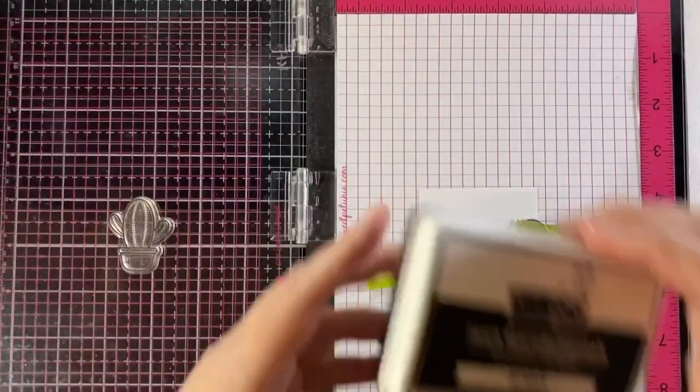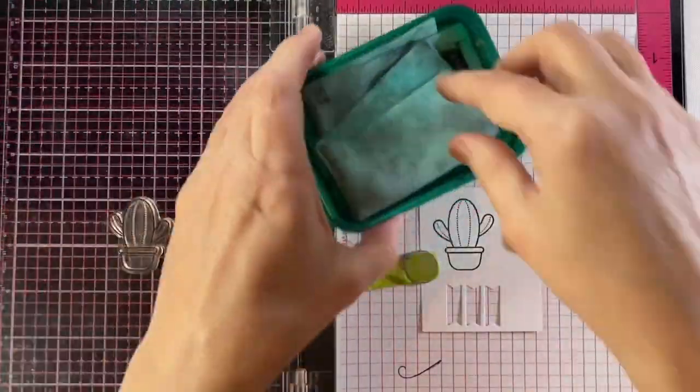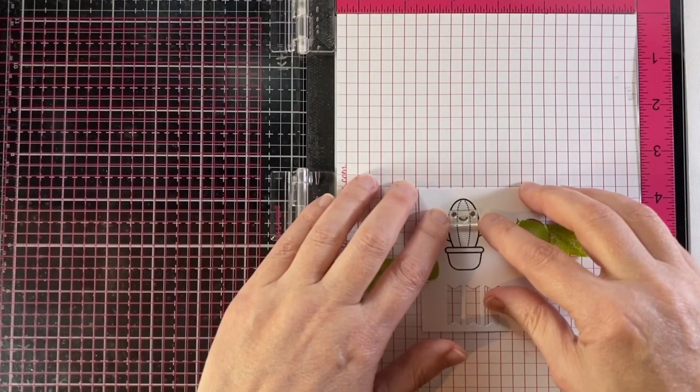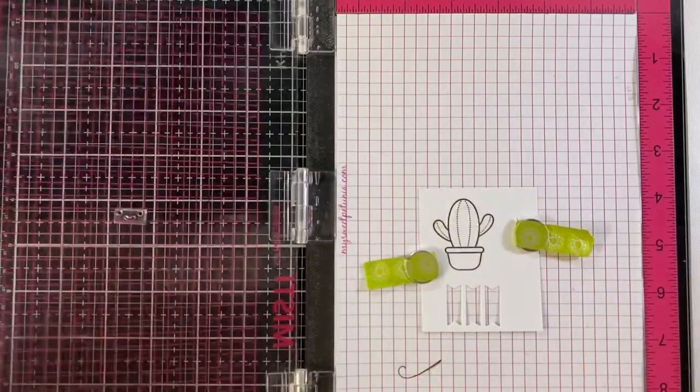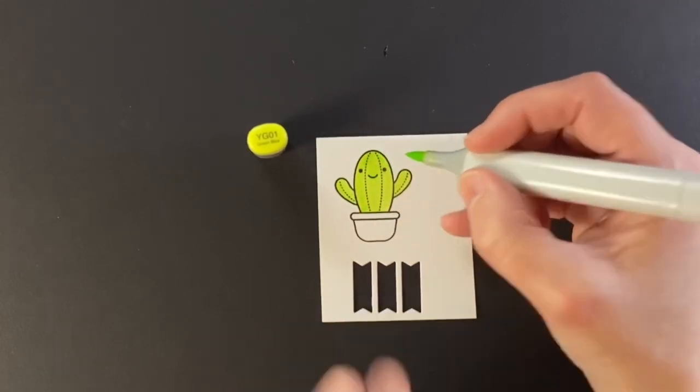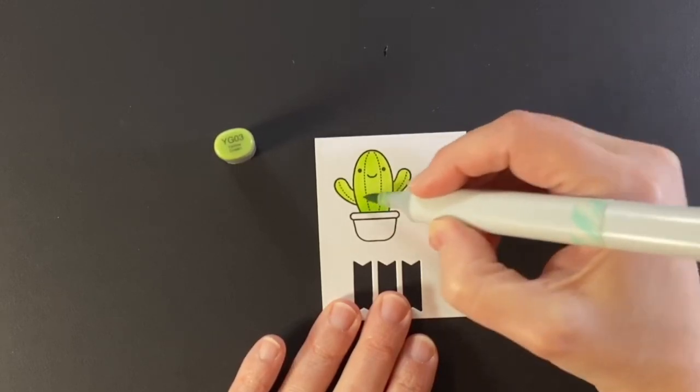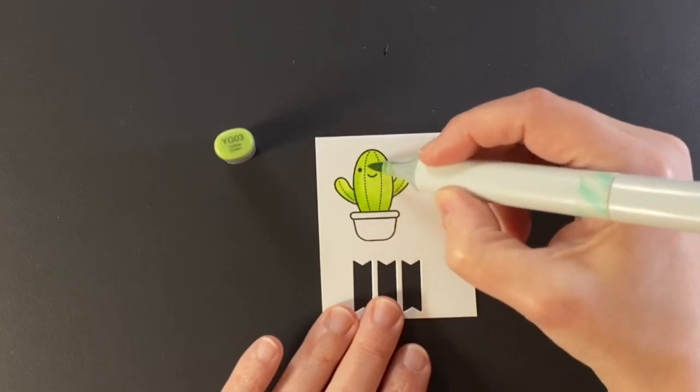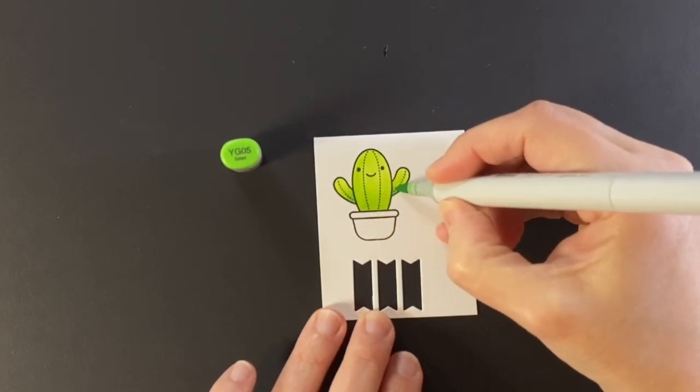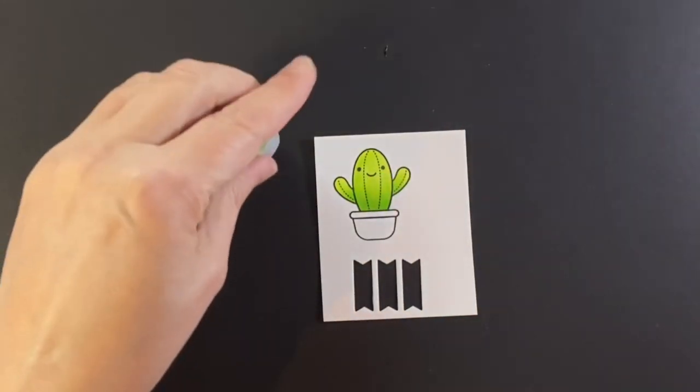I'll stamp up this cactus in jet black ink because I will color him in Copics. He needs a little face too, and I'm using the one with his eyes both open. I'm using YG01 to start and YG03, then I'll blend that back up with the YG01, darken things up with the YG05, and I even darken the bottom area up further with the YG07.